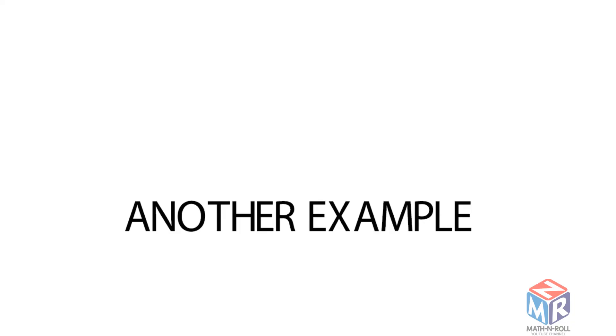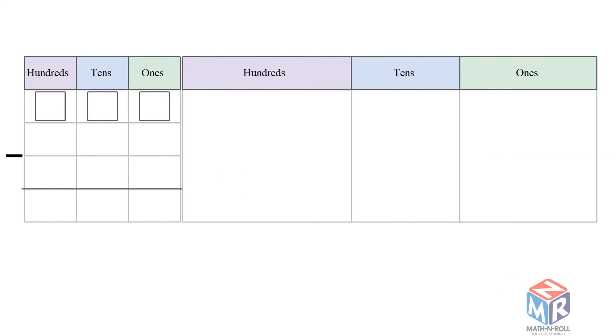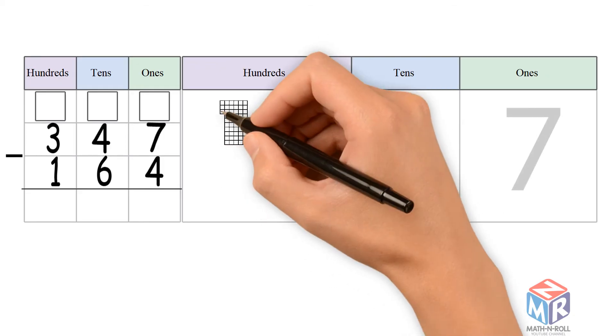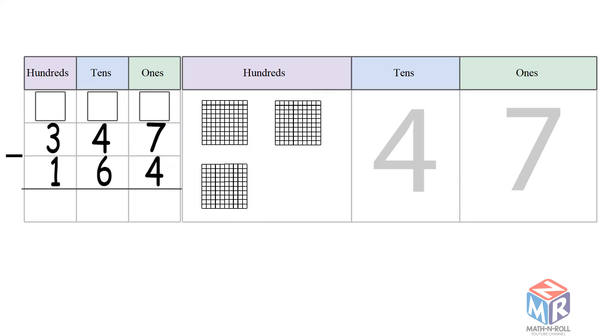Let's try another example. 347 minus 164. Let's draw it out. 347 has 3 hundreds, 4 tens, and 7 ones.